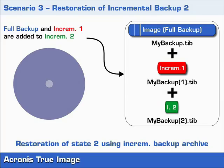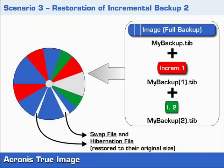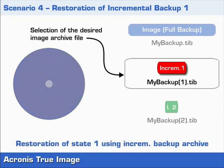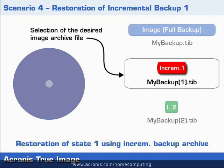This is precisely where differential backups are different from incremental backups. During restoration of state 2, Acronis True Image will restore any swap and hibernation files to their original size. These data files are essentially empty, and Windows fills them with data after the next system restart. This fact is only mentioned for the sake of completeness and doesn't play a role in understanding the topic at hand.